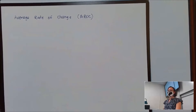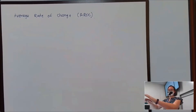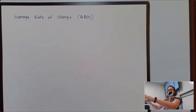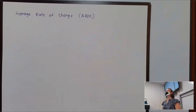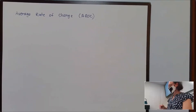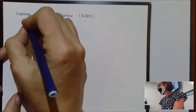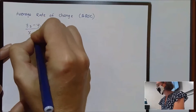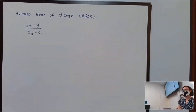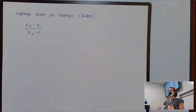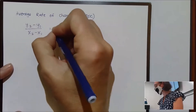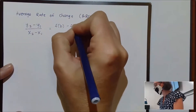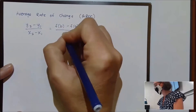Average rate of change, sometimes abbreviated as AROC, is like old school slope. If we're talking average rate of change, we're thinking y2 minus y1 over x2 minus x1. We just give these some grown-up calculus names: f of b minus f of a over b minus a.